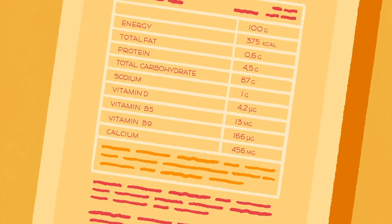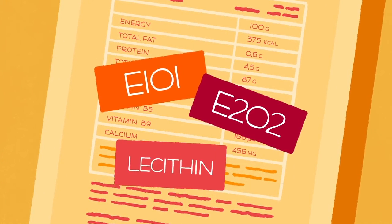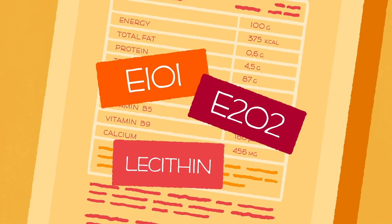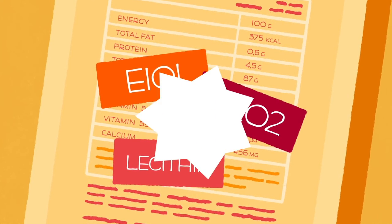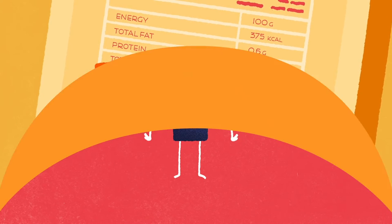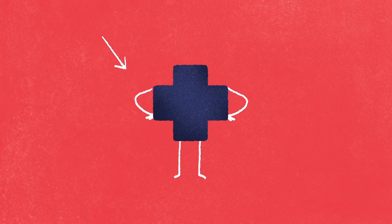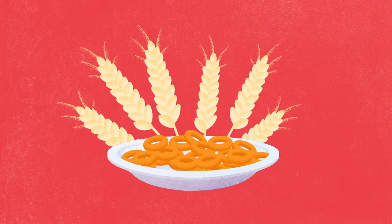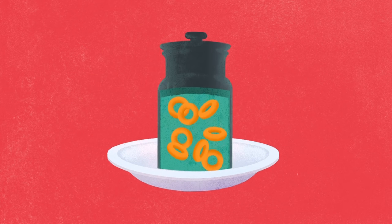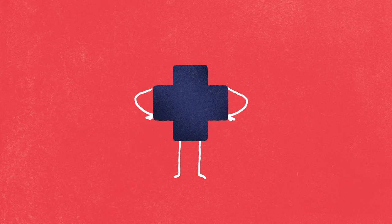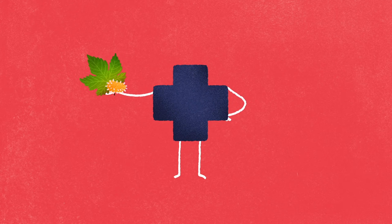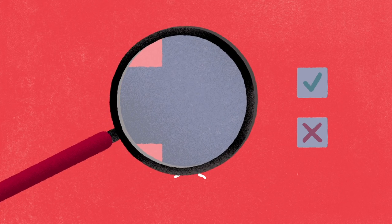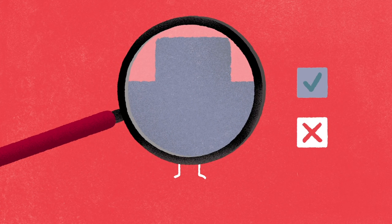But that's not all. E-101, E-202, lecithin — you've probably already encountered these mysterious names on your food labels, but what are they doing in our food? These are food additives. These substances are intentionally added to foods to give them colour, change their texture, enhance their taste, or for conservation. So these additives are used for technological, not nutritional purposes. They can be obtained from natural compounds, or they can be synthesised chemically. In many countries, before they can be used, additives are evaluated by food safety authorities.